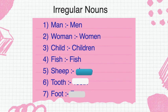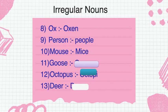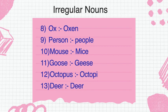Same way: sheep — sheep. Tooth — teeth, double O की जगह पर double E. Foot — feet. Ox — oxen. Person — people. Mouse — mice. Goose — geese. Octopus — octopi. Deer — deer. So these are some of the irregular nouns.